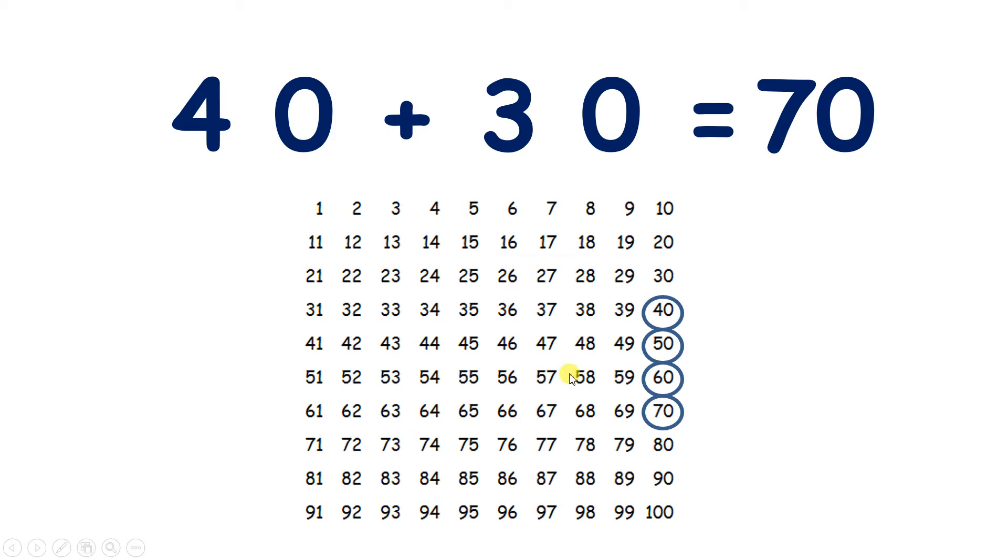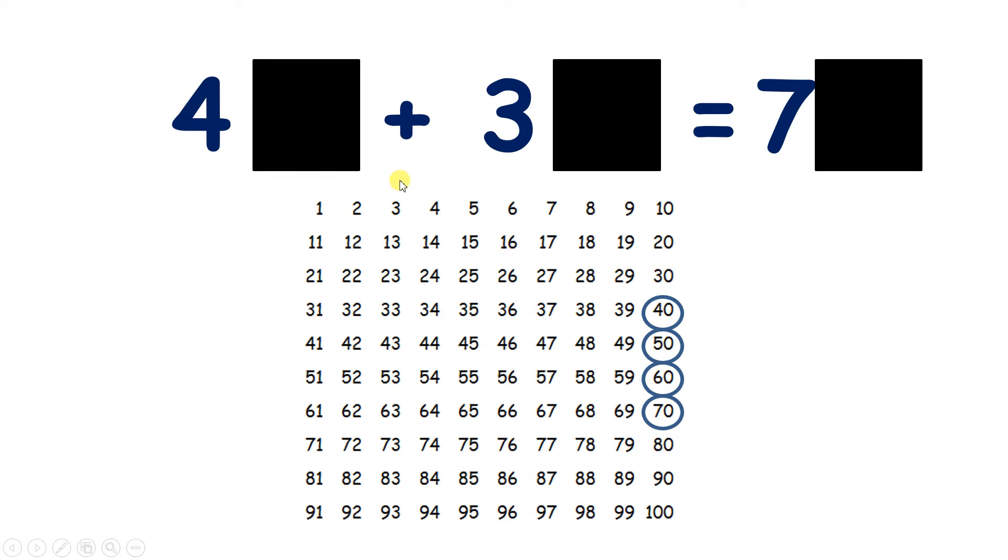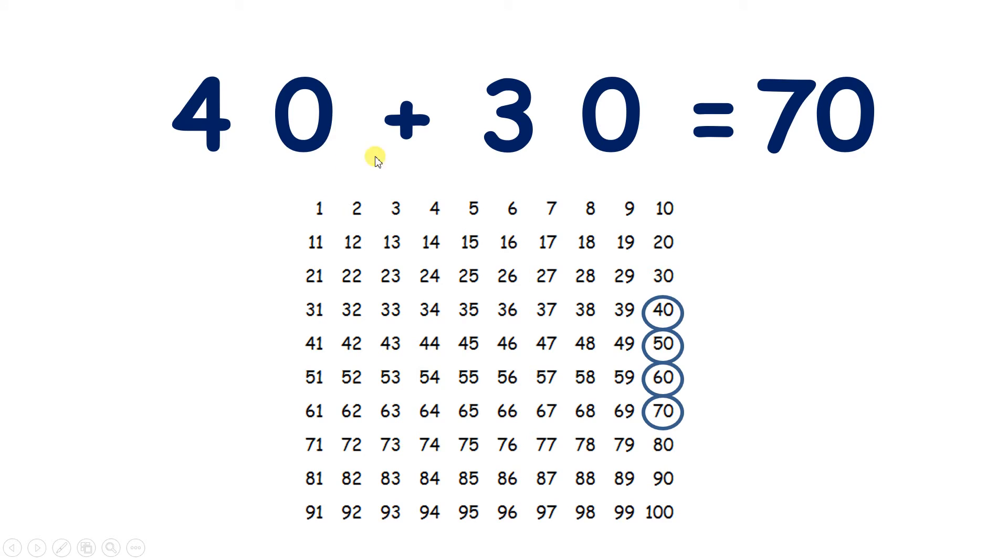But you don't really need a 100 square to answer this question. How could you add 40 and 30 mentally? Well, if you know that 4 add 3 is 7, then you know that 4 tens add 3 tens is 7 tens.